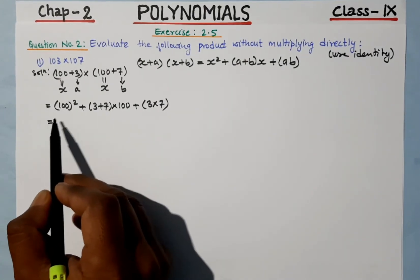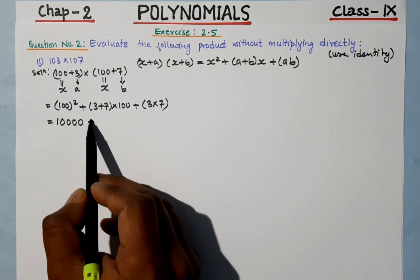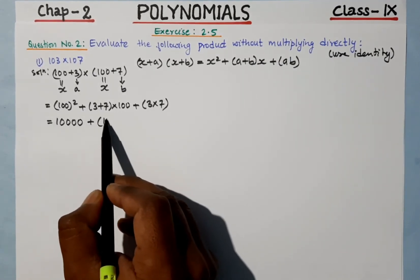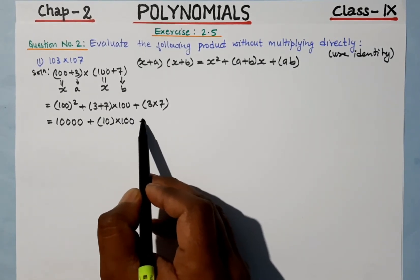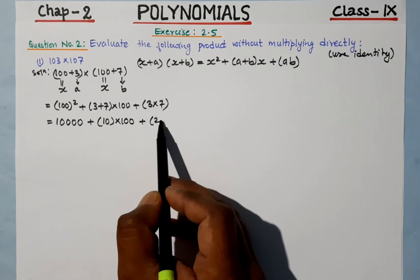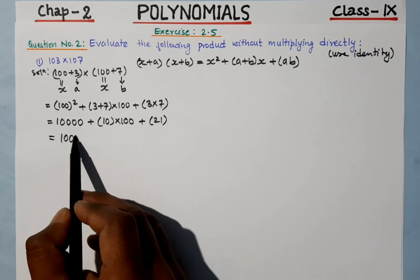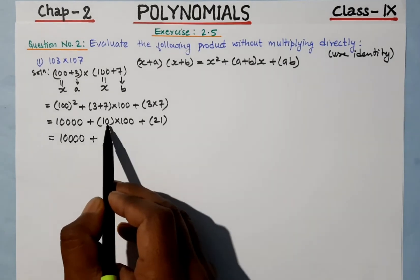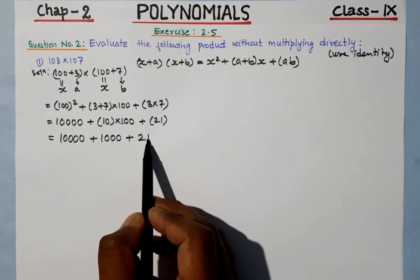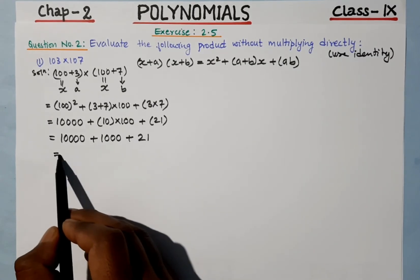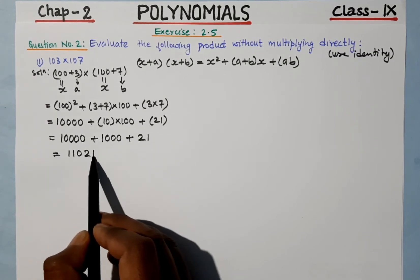Now simplifying: x² = 100² = 10,000. Then (a + b) × x = (3 + 7) × 100 = 10 × 100 = 1,000. And a × b = 3 × 7 = 21. So the answer is 10,000 + 1,000 + 21 = 11,021.